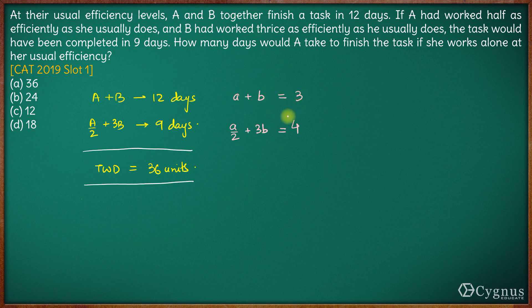So first equation is A plus B is 3, second equation is A by 2 plus 3B is 4. We can simplify this to, multiplying the whole equation by 2, A plus 6B is equal to 8. This is first equation and this is second equation.